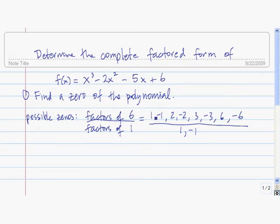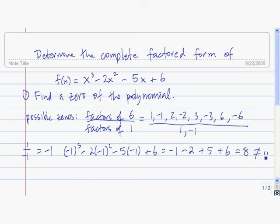Let's start with trying to see if 1 divided by negative 1 works. 1 divided by negative 1 is negative 1. To see if this works, we need to plug it into this and see if we get zero. If we plug it in, negative 1 cubed is negative 1. Negative 1 squared is positive 1, so this is minus 2. Negative 5 times negative 1 is positive 5, plus 6. So here we get negative 3 plus 11, which is 8. Since that's not equal to zero, that means negative 1 is not a zero of the polynomial.